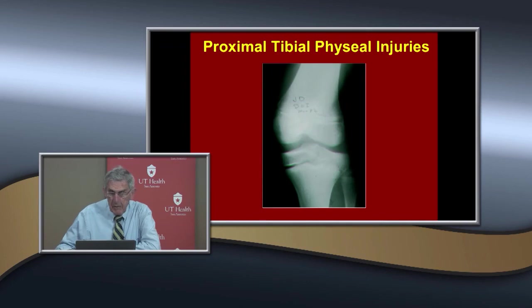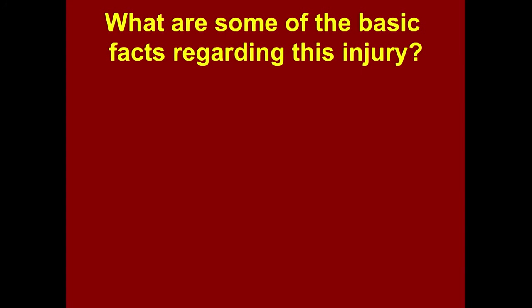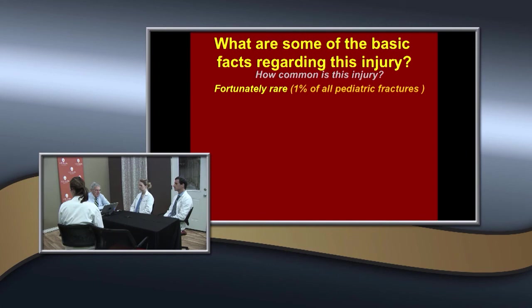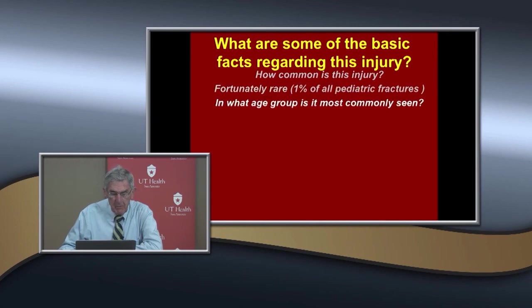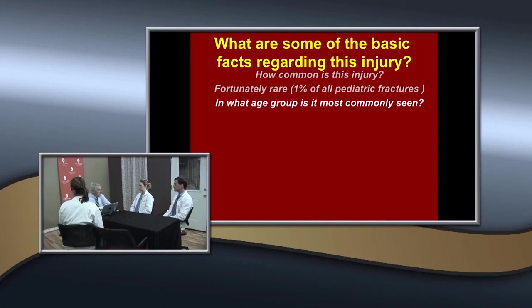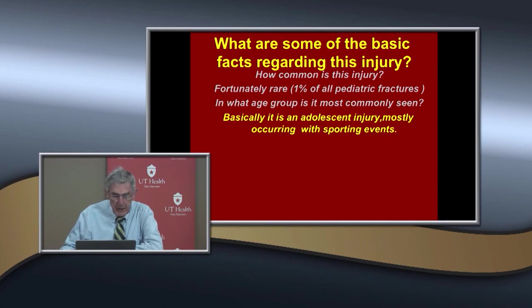Now we move to the proximal tibial physis. How often do you see a proximal tibial physis injury? Not very often — it's only about 1% of all pediatric fractures, which is fortunate. It's mostly seen in adolescents because it's associated with sporting injuries.